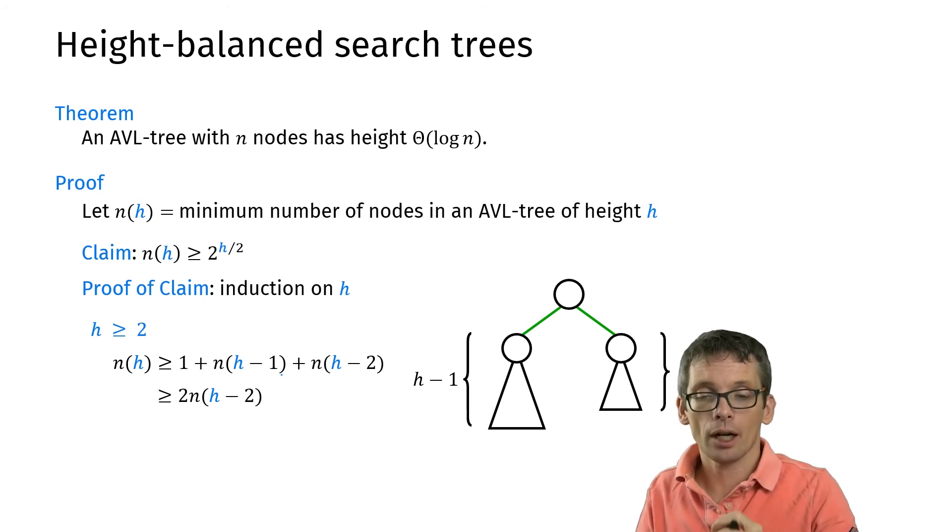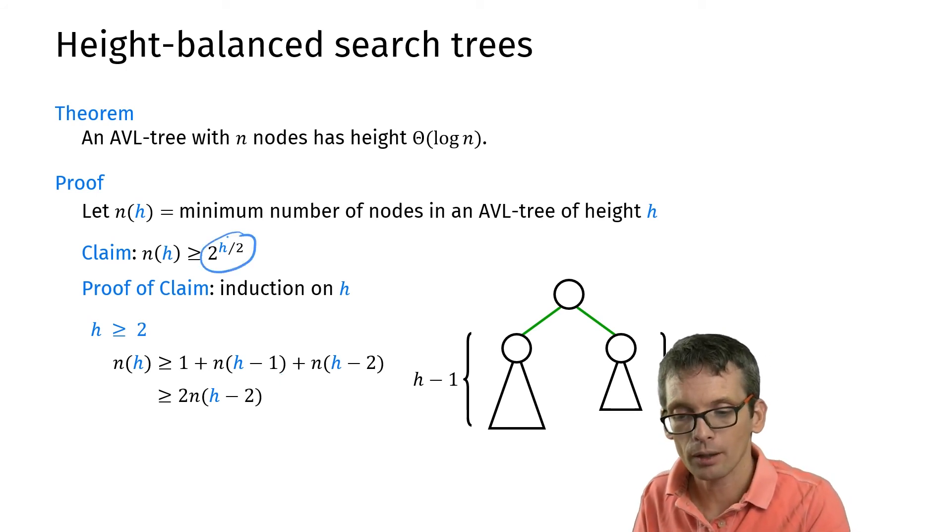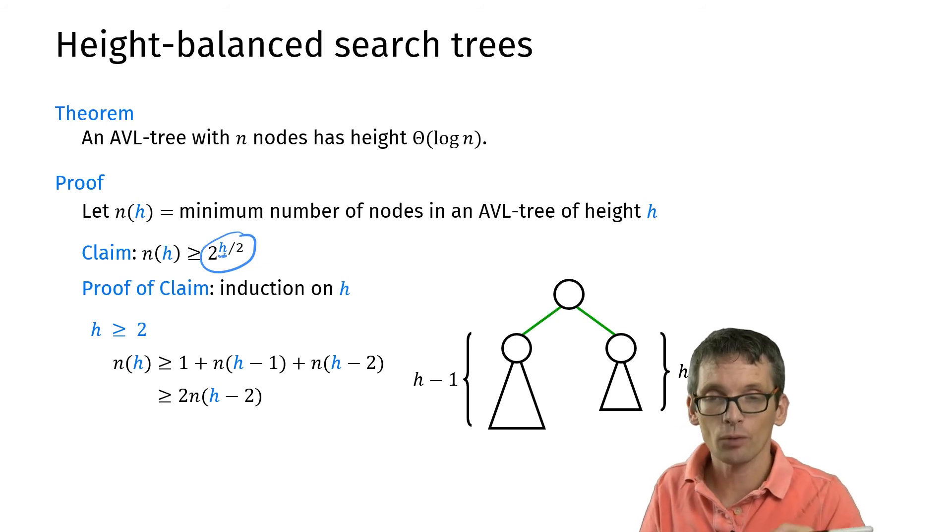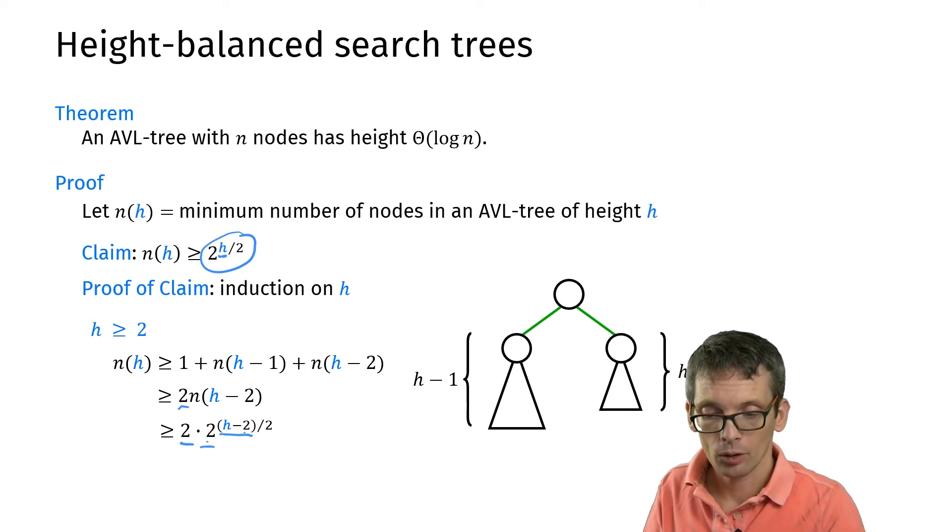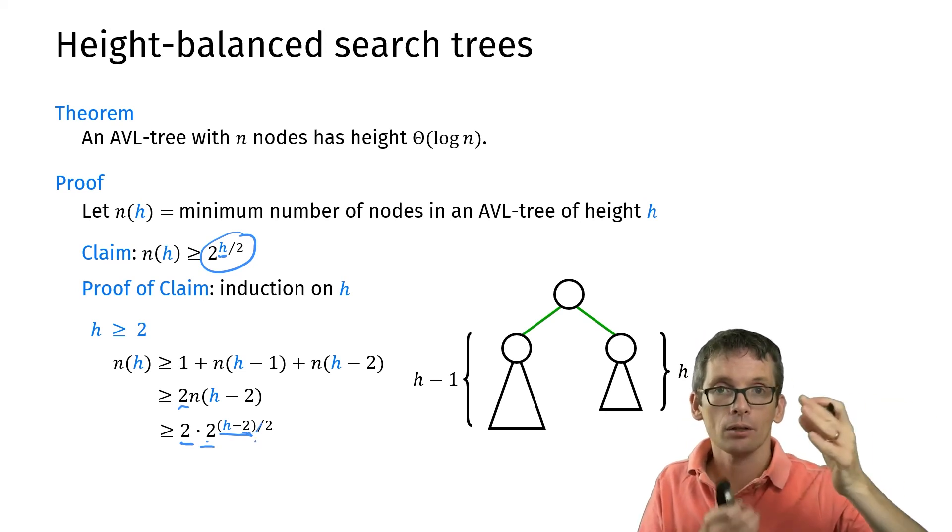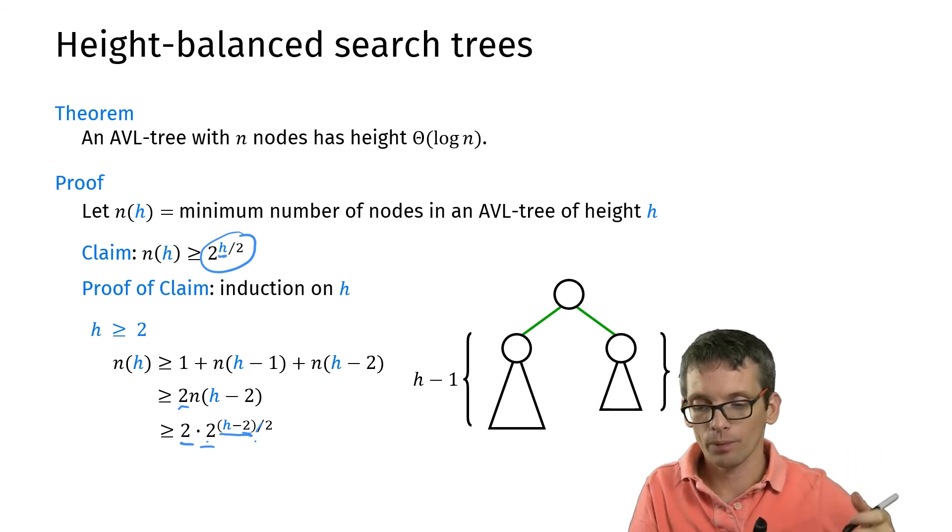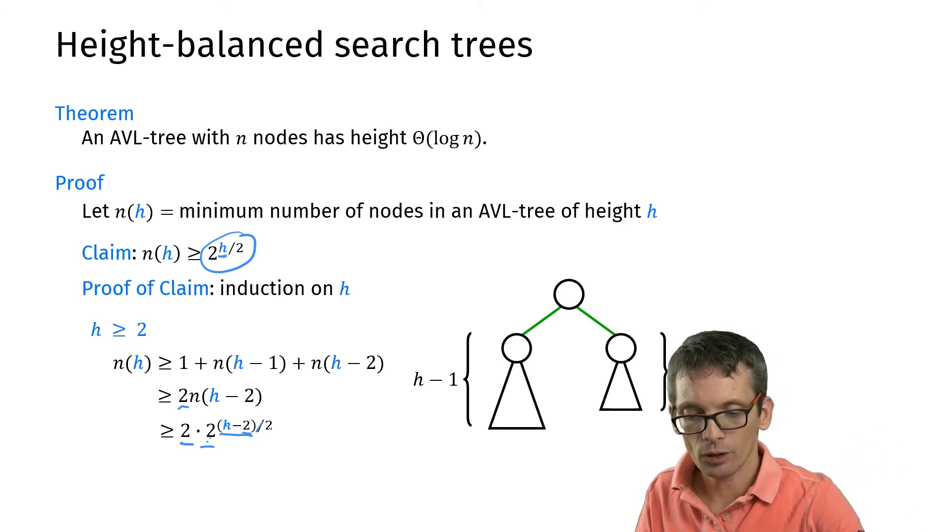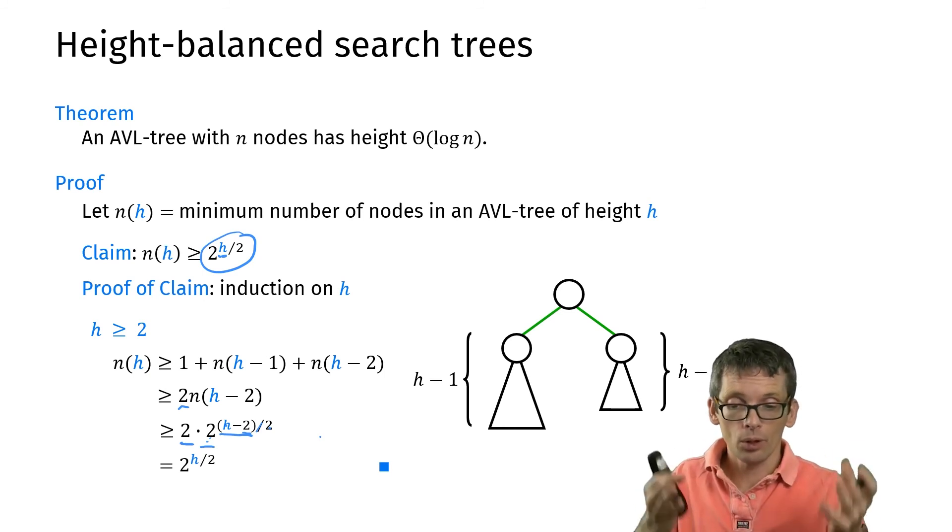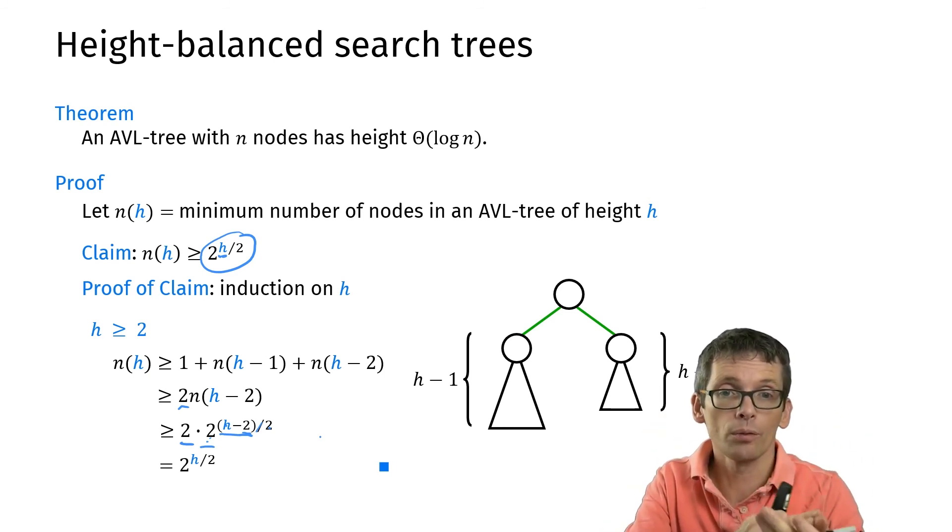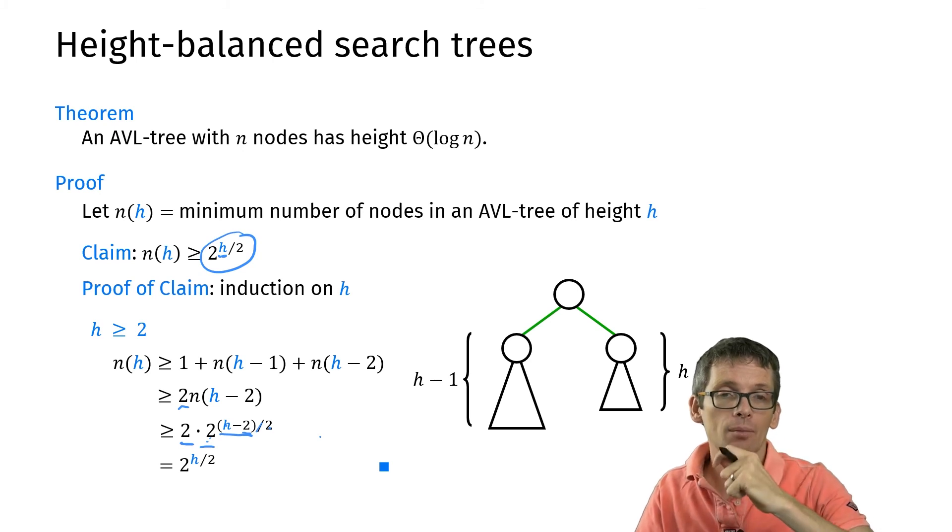Now I can use induction hypothesis so I plug in the claim but now not for h but for h - 2. So what do I get? I get 2 times 2^(h - 2)/2. So here the 2 divided by 2 that is the same as saying minus 1 but then not divided by 2. So I have 2^h / 2^(minus 1) times 2 so that's plus 1. So that is simply 2^(h/2). That's exactly what I wanted to prove so the claim holds.